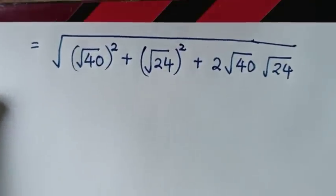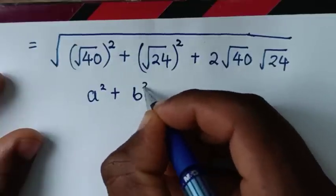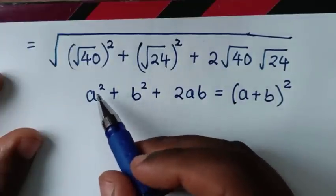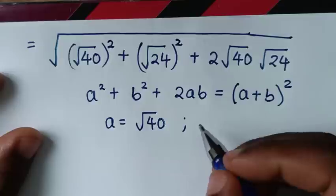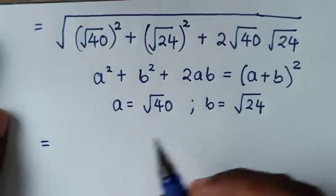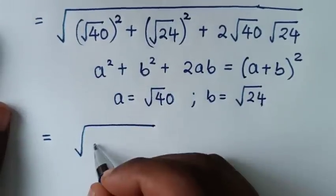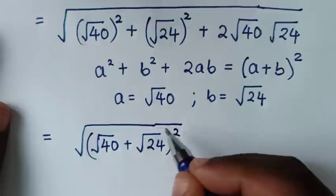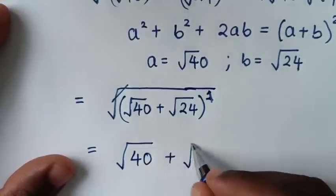Then from here we will make it in the form of this rule here: a squared plus b squared plus 2ab. So it will be equal to square root of 40 — to have common like this, square root of 40 is the same as (square root of 40) squared. Then plus 24 is the same as (square root of 24) squared. Then plus 2 square root of 40 times square root of 24. This is now in the form of a squared plus b squared plus 2ab, which is equal to (a plus b) squared. When we compare, a is equal to square root of 40 and b is equal to square root of 24. So it will be equal to square root of (square root of 40 plus square root of 24) squared. Then this square root will cancel the square, so it will be equal to square root of 40 plus square root of 24.